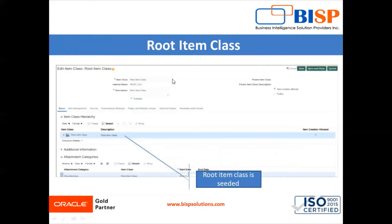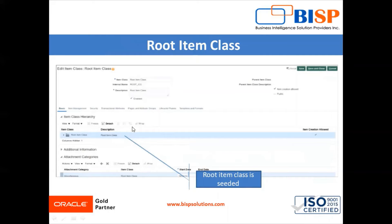By default, Oracle provides one seeded item class as the root item class. In the application we can create any number of item classes for classifying items in the instance. Based on the classification, you can set the security and the controls for your classification of items. In the instance we will see how the item class is created. With the item class you can create any item in Oracle Fusion application. Now let's go to the instance.